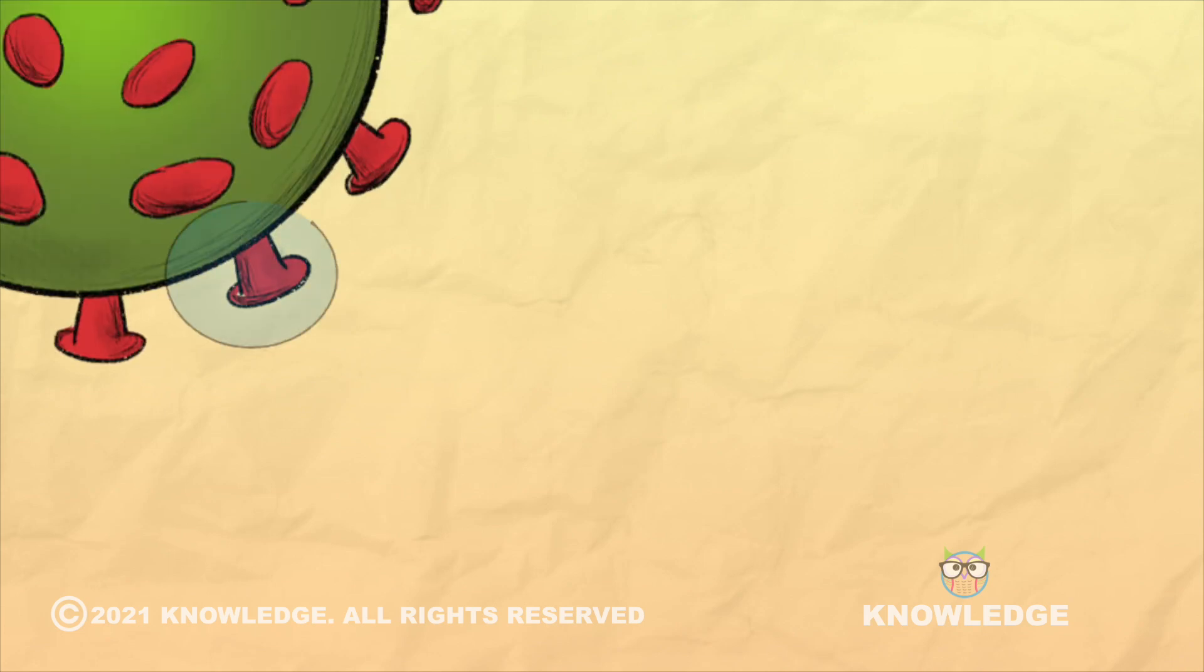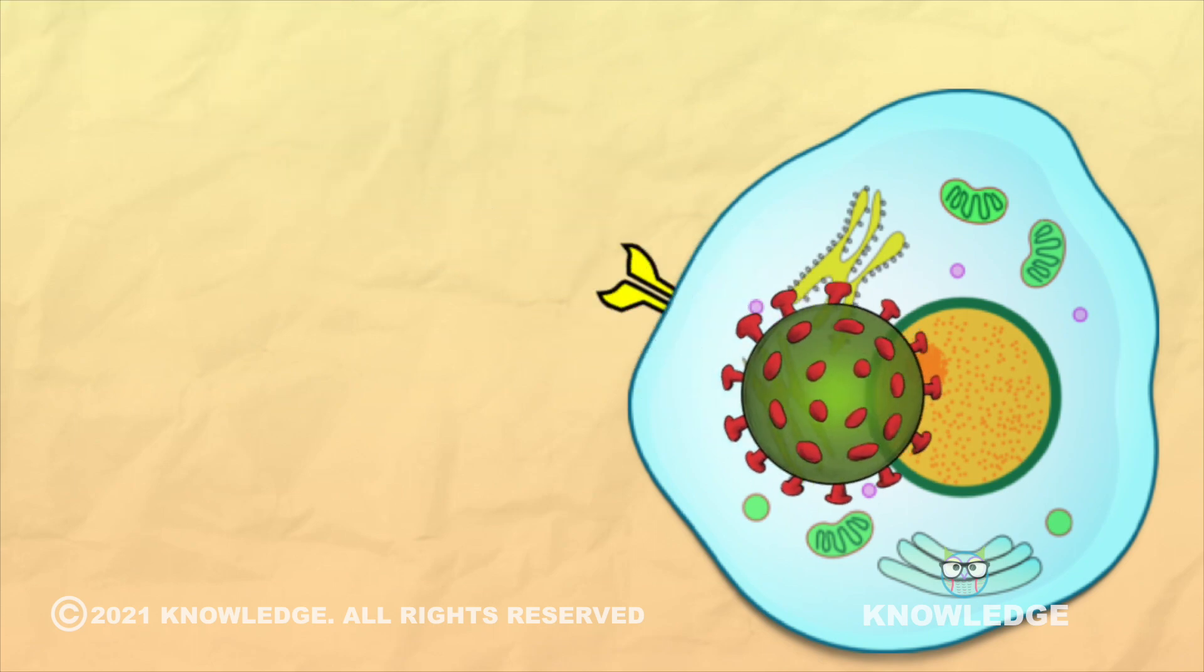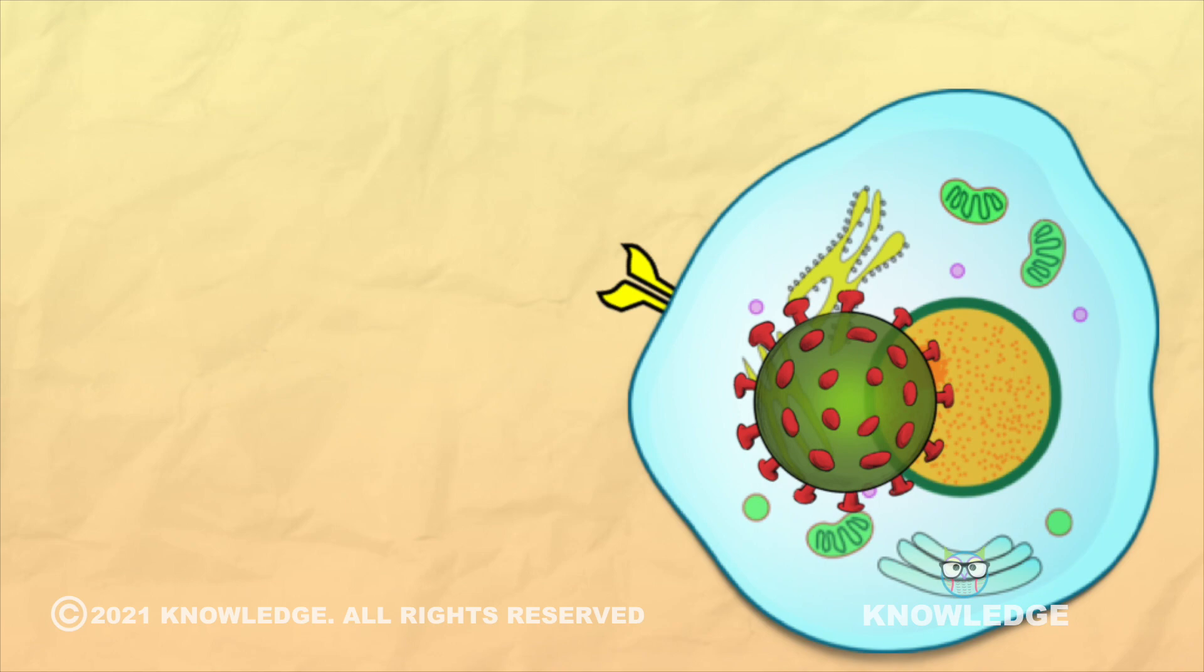The mutation is in the spike protein of SARS-CoV-2 which helps the virus enter and infect the human cells. This mutation is helping the virus to bind more efficiently with our cells.